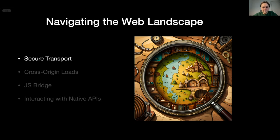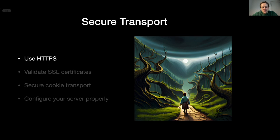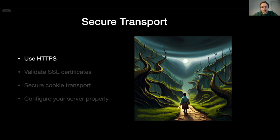Starting with secure transport: avoid using plain HTTP if you can. It's much more difficult with every new iOS version to do so. There is a concept of App Transport Security, ATS for short — it's enabled by default and blocks all non-HTTPS network connections. You do have an option to disable this check for some domains, but my advice is to avoid doing so. Also make sure your web content loaded in WKWebView doesn't mix HTTP and HTTPS, as mixed content can compromise an HTTPS page's security.